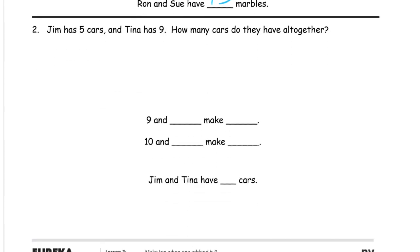Jim has five cars and Tina has nine. So we have Jim has one, two, three, four, five, J for Jim. Tina has nine. One, two, three, four, five, six, seven, eight, nine.